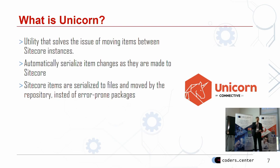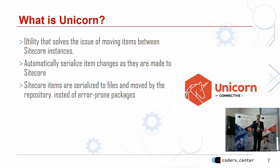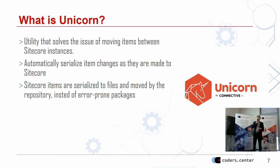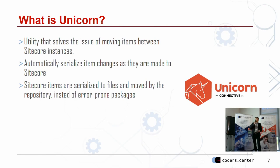When you change something in Sitecore and you have Unicorn, it will just serialize those changes. And you will see in SourceTree or TortoiseSVN — anything you use with your repository — that something has changed and you should probably commit these changes. So the Sitecore items are serialized to files and can be moved via the repository instead of those error-prone packages.